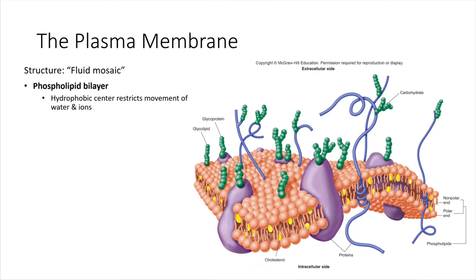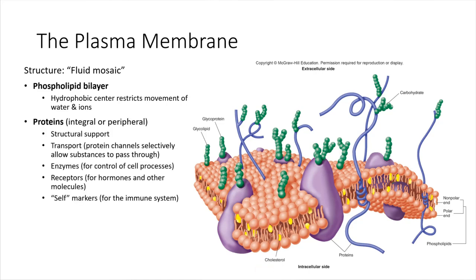In addition to the phospholipid bilayer, there are proteins embedded in the bilayer. The proteins are shown in purple in the schematic, and they can do a lot of different things. Some provide structural support, others allow transport — some proteins have channels that run down the middle, allowing certain ions to move through under special conditions. Others might be enzymes that facilitate chemical reactions right in the plasma membrane.